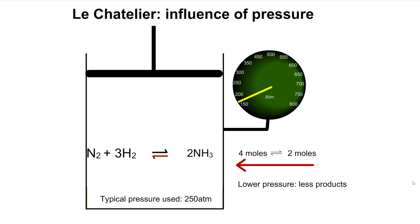In the Haber process, we want to make as much ammonia as possible. We want the dynamic equilibrium to be such that a lot of product is formed. An increase in pressure will cause more product to form, so we need as high a pressure as it is safe and economical to use.